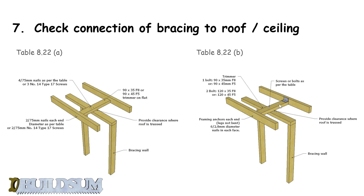The timber framing code gives you all these requirements, so you have to match your connection type to the ceiling based on the bracing capacity of the actual wall. That covers the top of the wall.